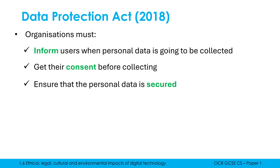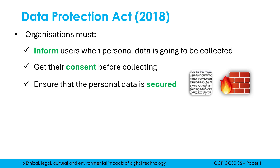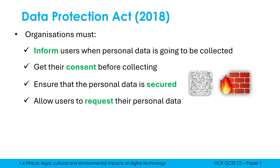Organizations also need to ensure that once they are collecting personal data there is adequate security in place, so that a hacker can't easily access all of that personal data. The law doesn't specify you must have encryption or a firewall, but those are the sort of things you'd expect an organization to have, along with anti-malware, physical security, and other methods. If you were hacked and had a big data breach and the ICO felt you hadn't put in adequate security, that would make the fine even bigger.